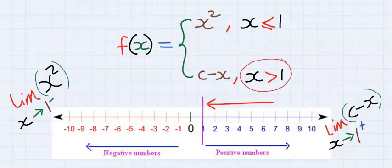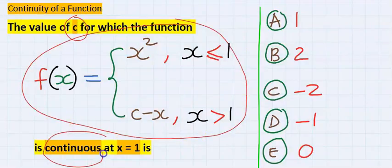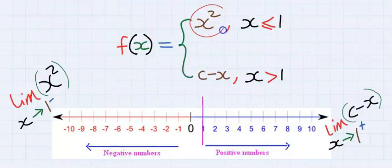From the question, the value of c that makes this function continuous at x equal to 1 simply means the left hand limit must be equal to the right hand limit for this function to be continuous.